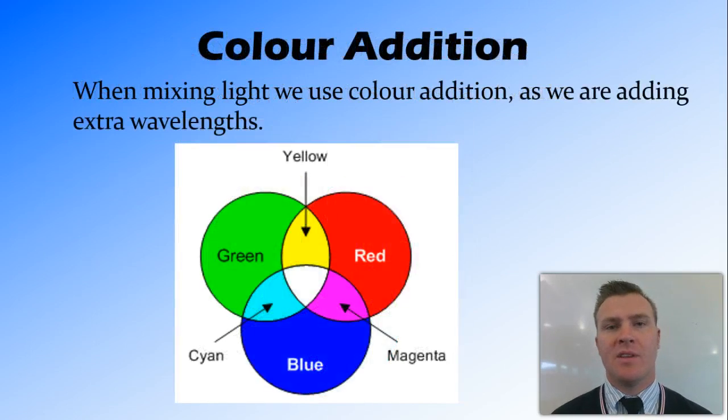The opposite of this is used when we're mixing lights together and it's called colour addition. So when we have two lights of different colours and we add them together, what we end up with is the two different wavelengths of light or more wavelengths than we started with and they add together in a different way.